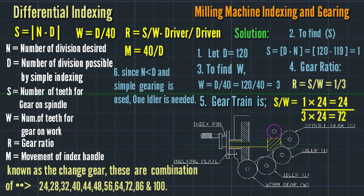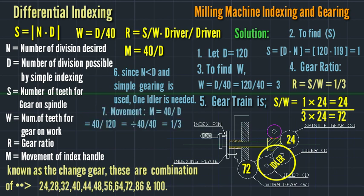The gear train is 24 teeth driver, then 72 driven, plus one idler. Number 7: the movement of index handle. The formula is M equals 40 divided by D. So equals 40 divided by 120. 40 divided by 40 is 1, then 120 divided by 40 is 3, so we have 1/3.